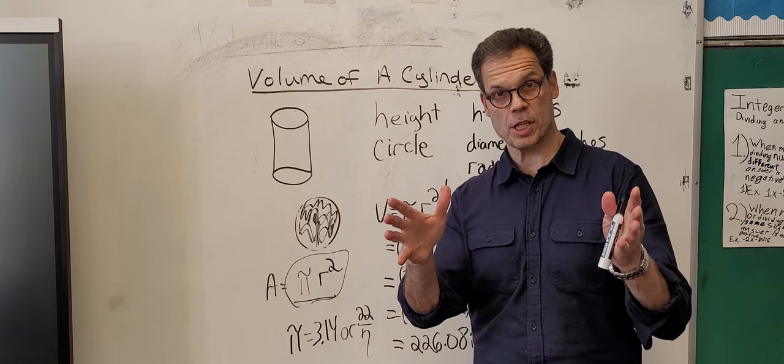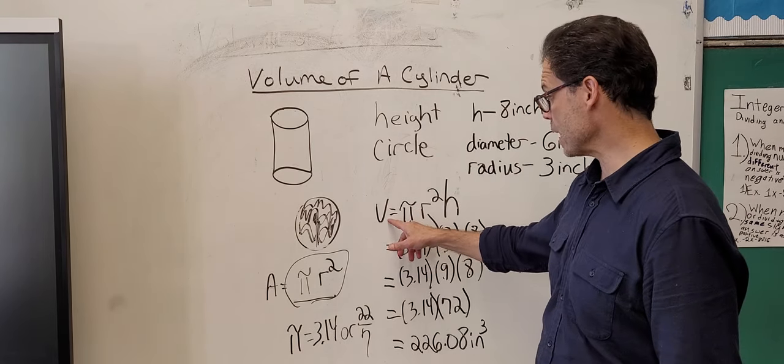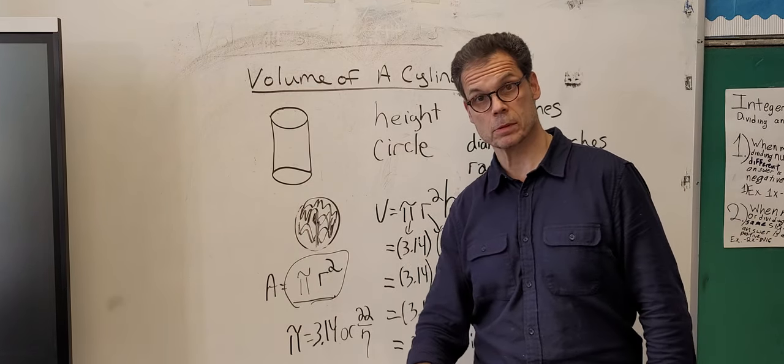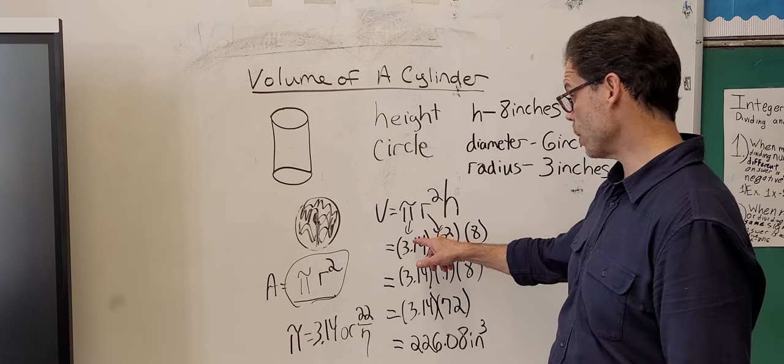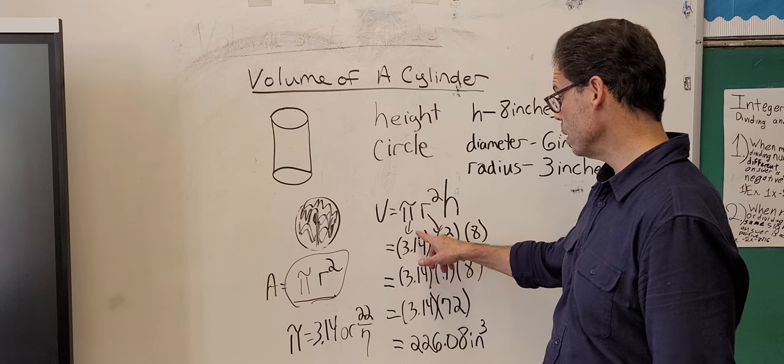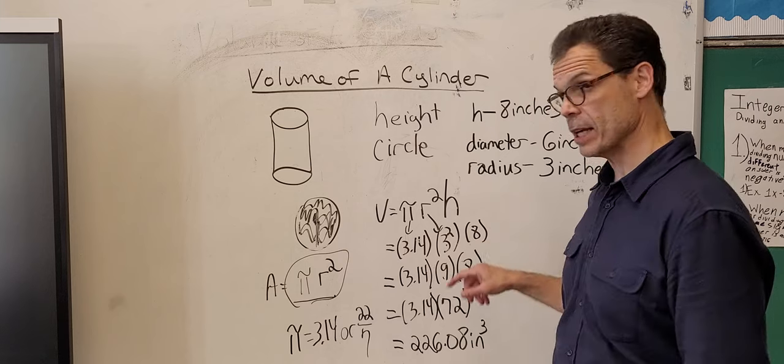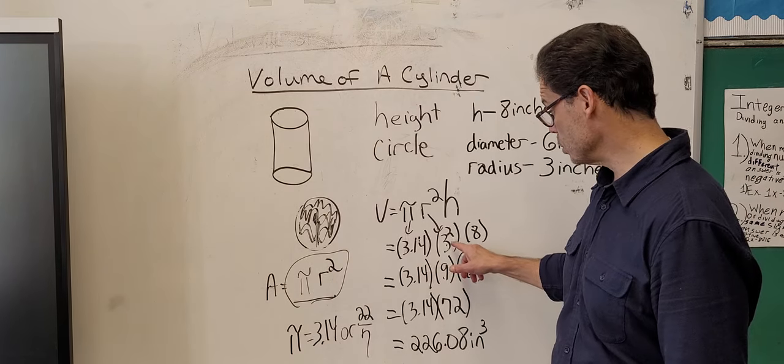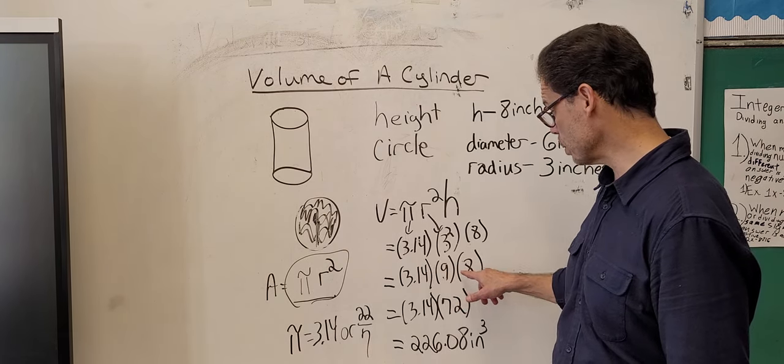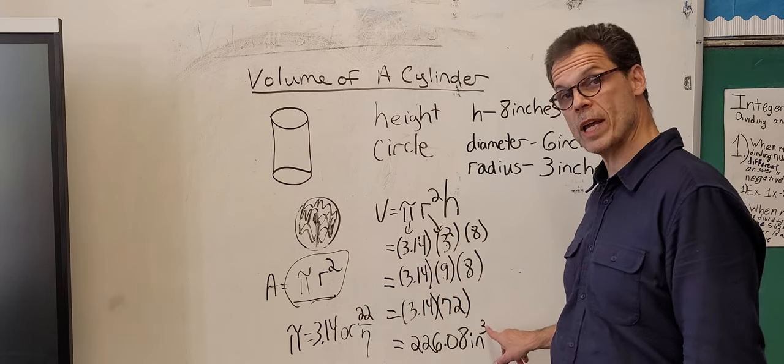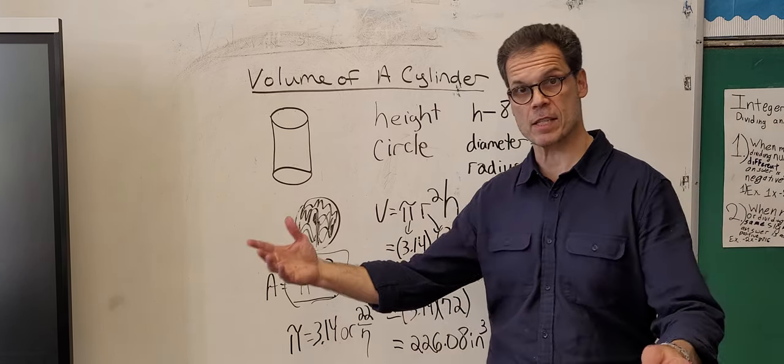So basic procedure: pi equals pi r squared times height. You know why now. Plug in your pi 3.14, plug in your radius, square it, and multiply by your height. Do your square first, multiply your numbers, multiply by pi. Your unit is always key: inches, feet, centimeters.